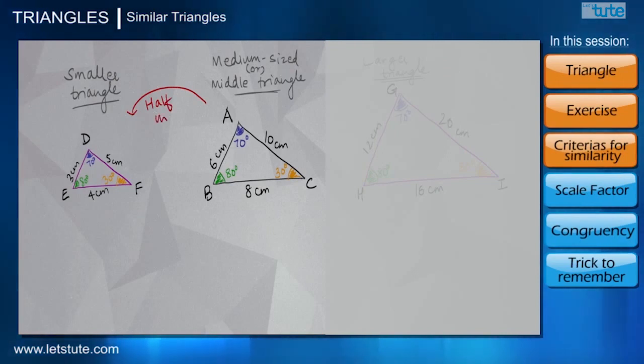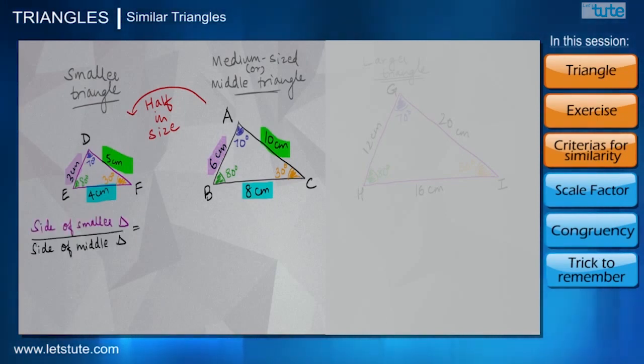And I am saying that because all of its sides are actually half in length as compared to the sides of the triangle ABC. So if we take the ratio of the sides—that is, the ratio of side DE of the smaller triangle to its corresponding side AB in the medium triangle—we will get 3 upon 6, which is nothing but 1 upon 2.